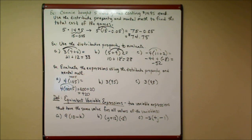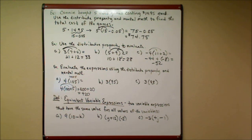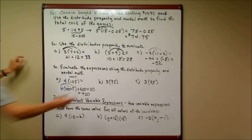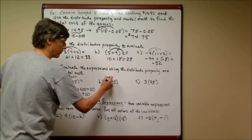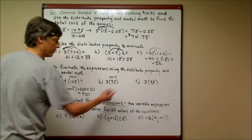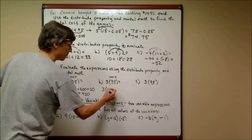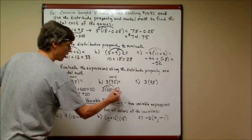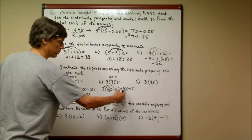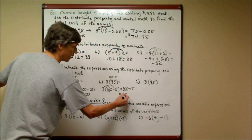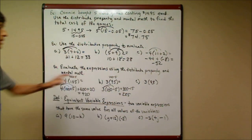For 3 × 95 — this is almost 100 but 5 less, so I think of it as 100 minus 5, and write three times (100 − 5). Distributing: three times one hundred is three hundred, minus three times five is fifteen, giving two hundred eighty-five.